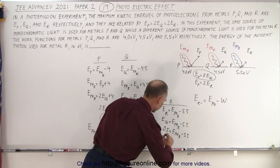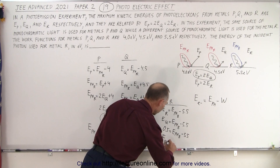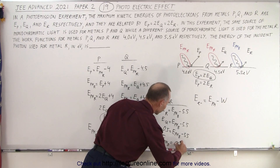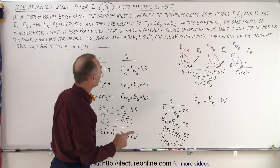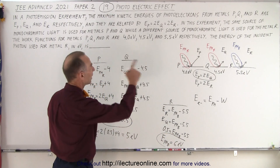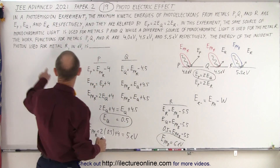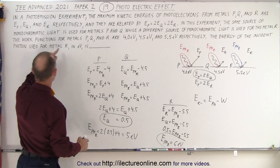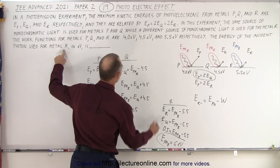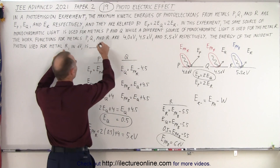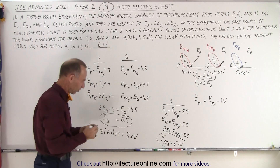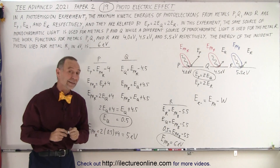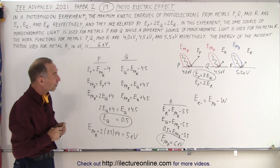Moving that across, E_photon_blue = 6 electron volts. That is the energy of the incident photon used for metal r — and that's our answer.